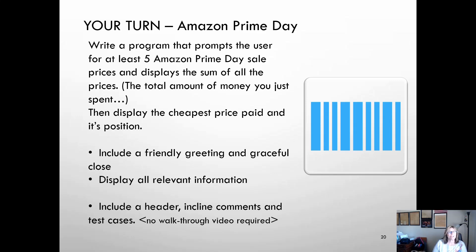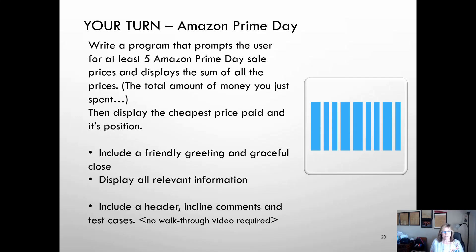Our video lab for section 5 is to prompt the user for a variety of different prices for Amazon Prime Day. Read in at least 5 prices, then tell them the total of all the prices, the cheapest one they chose, and the position of the cheapest one. You can use vectors or arrays — either is acceptable. Include a friendly greeting and a graceful close, display all relevant information with proper labels, include header information with your name and a brief description of the program — remember, the name of a program is not a description — and include inline comments in the form of pseudocode as you map out your plan. Finally, include test cases. No walkthrough videos are required.